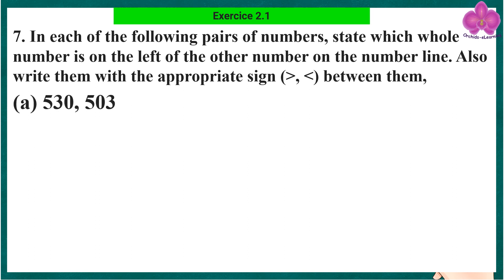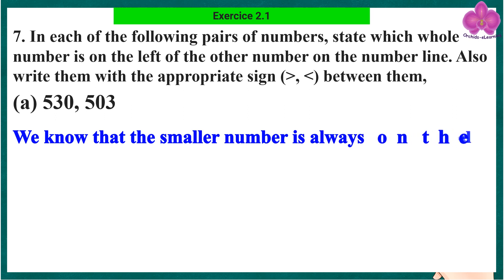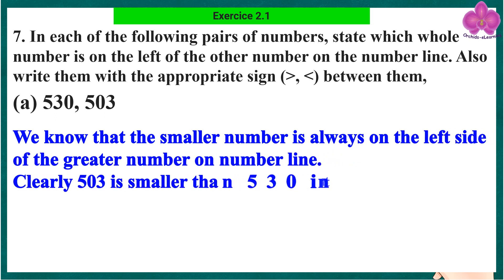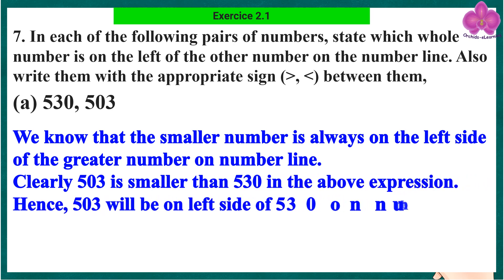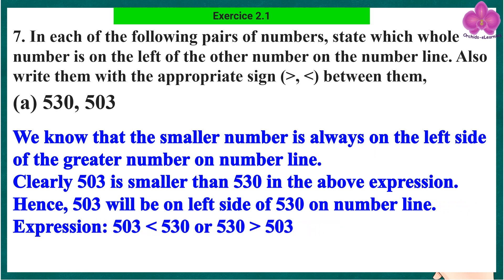Part a: 530, 503. We know that the smaller number is always on the left side of the greater number on the number line. So clearly, 503 is smaller than 530 in the above expression. Hence, 503 will be on the left side of 530 on the number line.